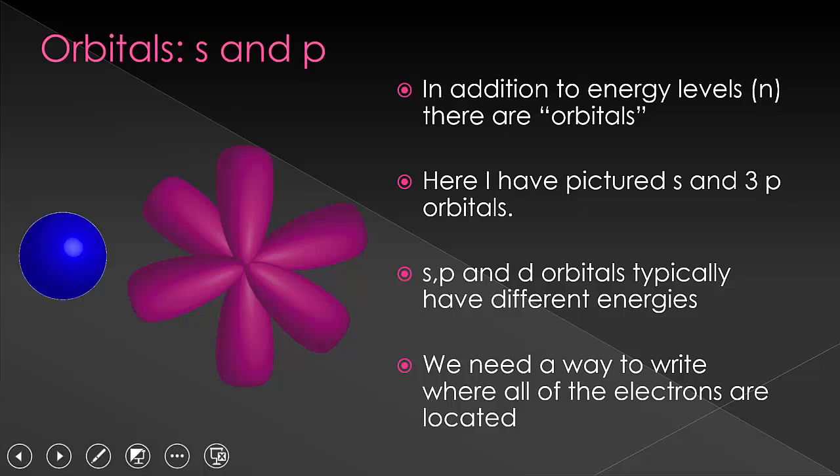There is more to where electrons are located than simply energy shells. There are also subshells and orbitals. Electrons do not simply orbit the nuclei as small items going in a circle. Instead they form delocalized clouds of electron density, called orbitals, which take on particular shapes based on their wave functions.